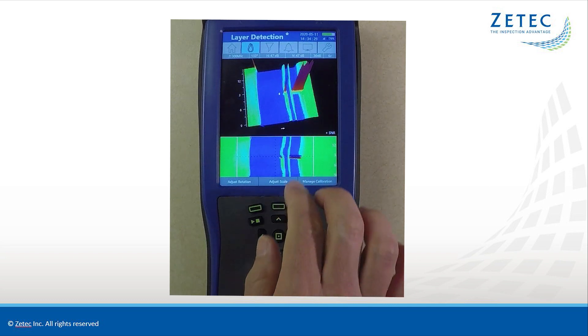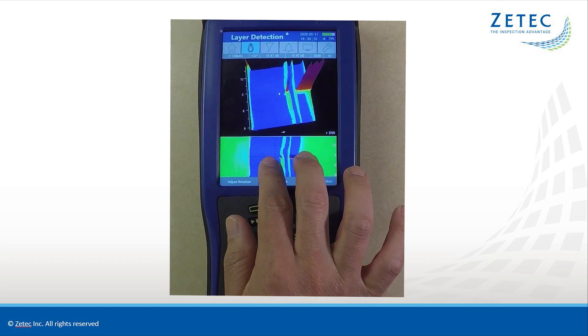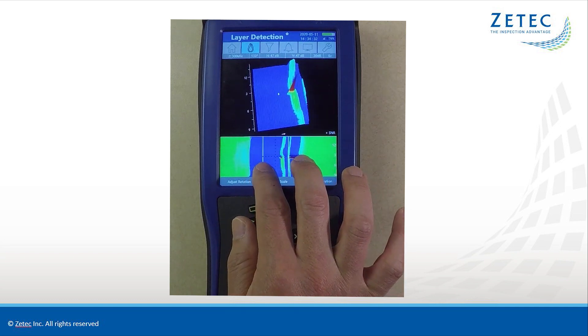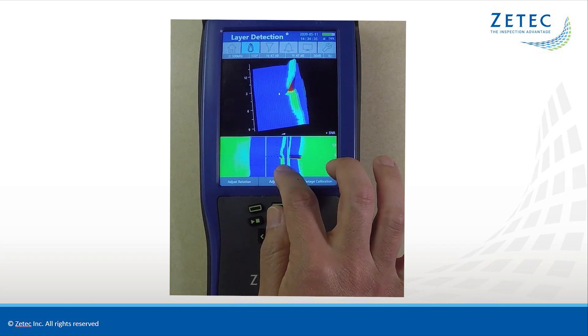In this example, you can clearly see three distinct layers. I can focus on this flaw here and see that it is in the first layer.